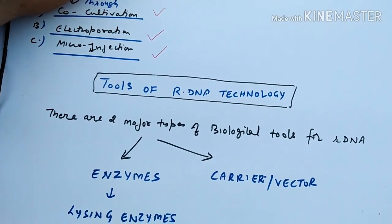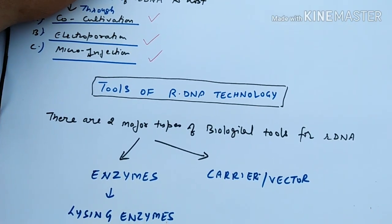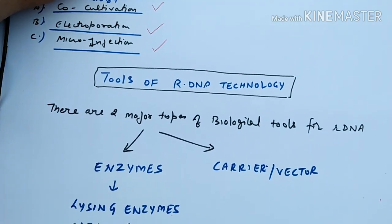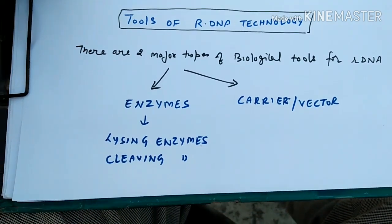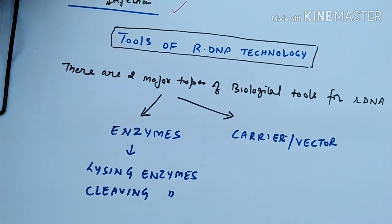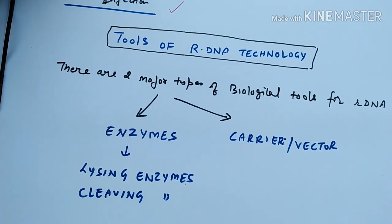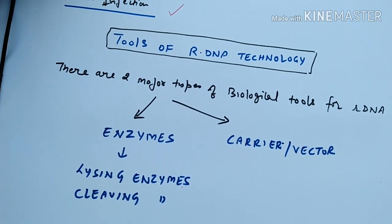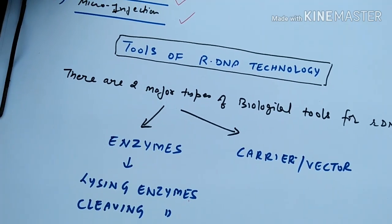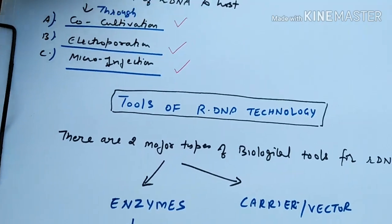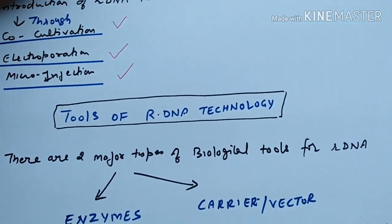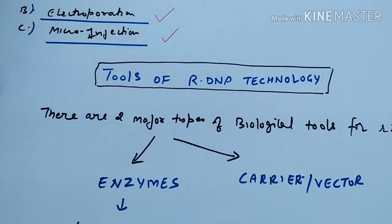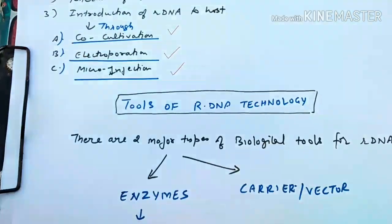There are two biological tools: the first is called enzyme and the second is the carrier. We use two types of enzymes involved in cleavage. The enzyme performs cleavage of the DNA fragment, and the carrier vector also involves the DNA fragment.